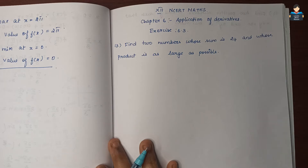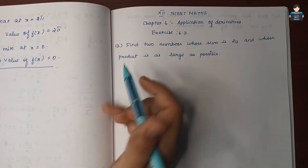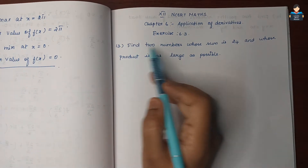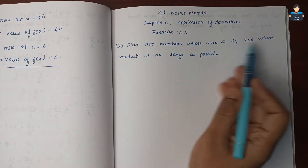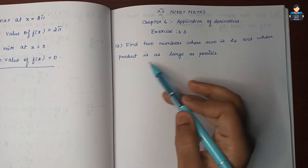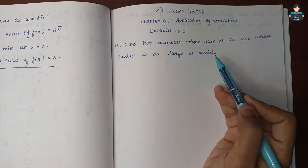Hello everyone, welcome to our channel. In this video we cover 12th standard NCERT Math Chapter 6, Applications of Derivatives, Exercise 6.3, Question number 13: Find two numbers whose sum is 24 and whose product is as large as possible.